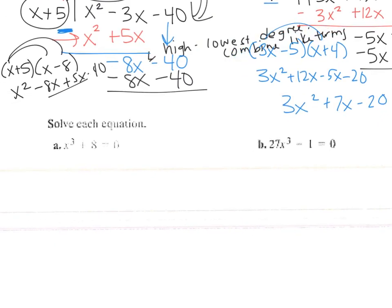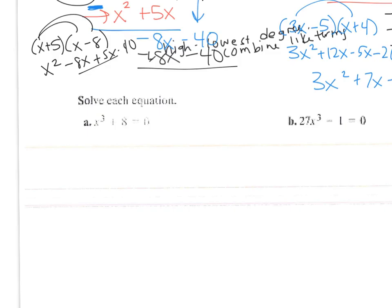And then the last part, solve these cubic equations. So just like a square root, you want to get the cube root by itself, or that x cubed term by itself. So you're going to subtract 8 from each side. Then to get rid of the cube, you need to take the cube root of negative 8. So you're going to get x equals negative 2.